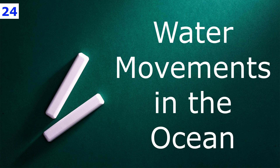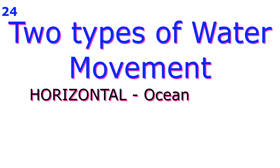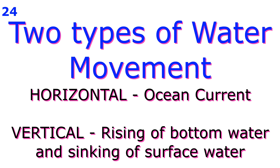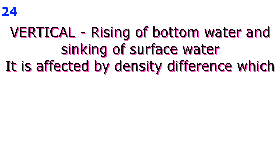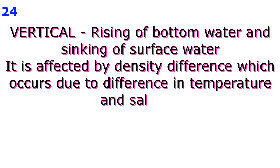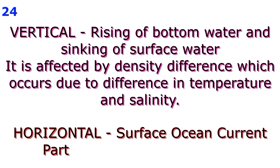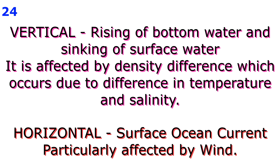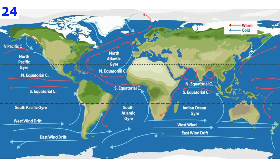There are two types of water movements in the ocean: horizontal movements, which are ocean currents, and vertical movements, which are the rising of bottom water and sinking of surface water. These movements result from the combined action of density — particularly important in vertical movement — and winds, which are particularly important in horizontal movement.